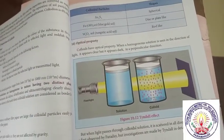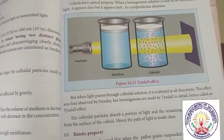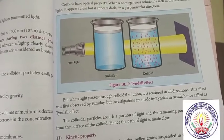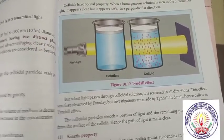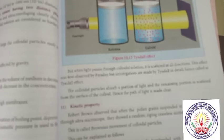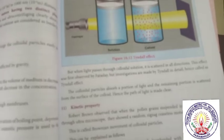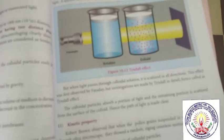The colloidal particles absorb a portion of light and the remaining portion is scattered from the surface of the colloid, hence the path of light is made visible. Kinetic property: Robert Brown observed that when pollen grains suspended in water were viewed through the ultramicroscope, they showed a random zig-zag continuous motion. This is called Brownian movement of colloidal particles. The colloidal particles are continuously bombarded with molecules of the dispersion medium and hence they follow a zig-zag random continuous movement.